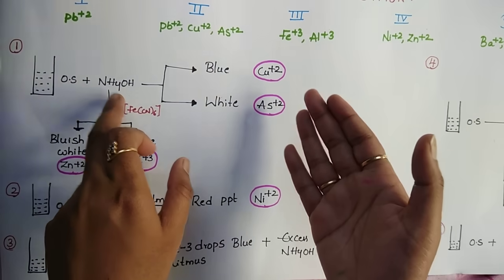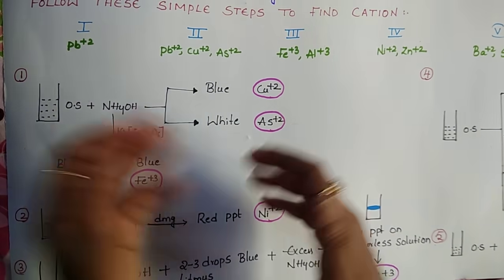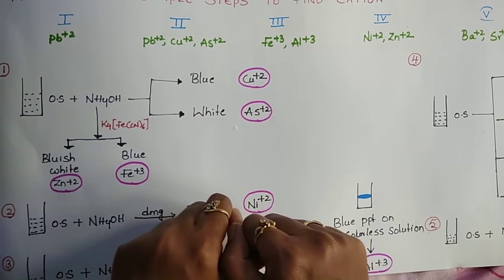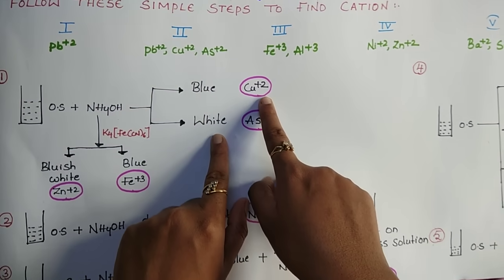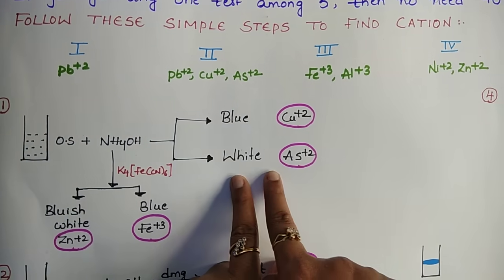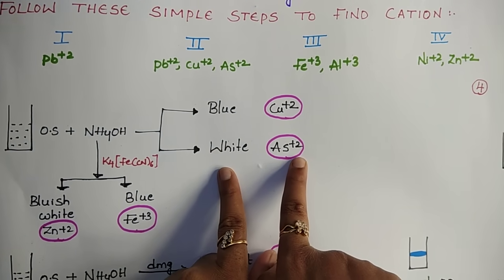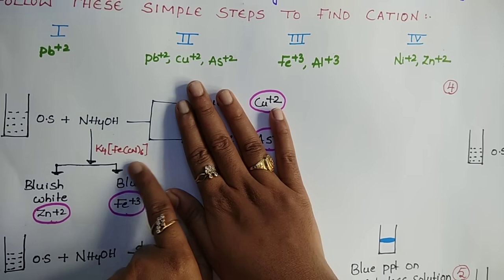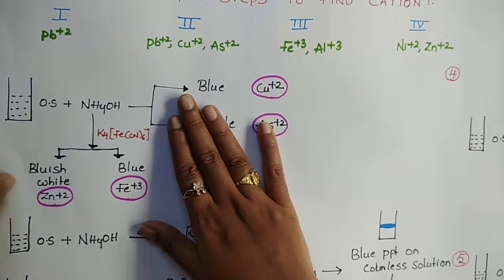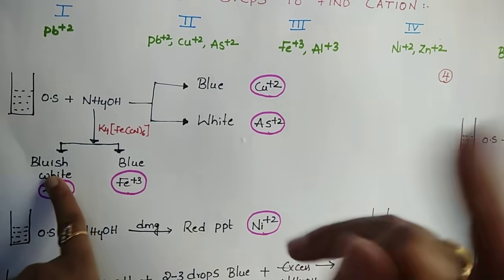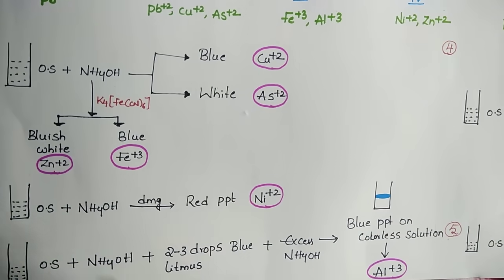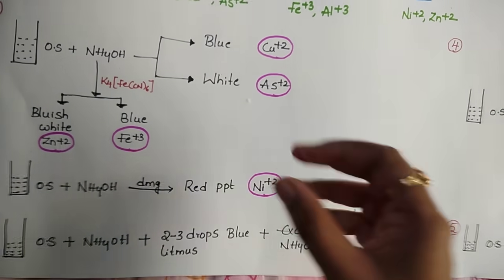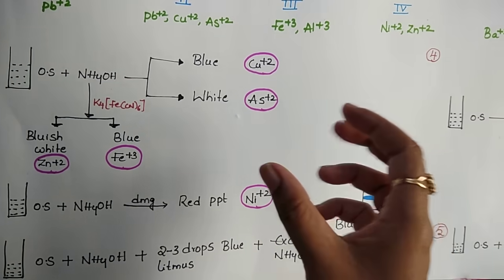Take your original solution and add ammonium hydroxide (NH₄OH) solution, available in your laboratory. You may observe two things: if blue color forms, it indicates Cu²⁺ cation is present; if white precipitate forms, it indicates As²⁺ (or Al³⁺ group) cation is present. If there is no color change after adding NH₄OH, add K₄[Fe(CN)₆] — potassium ferrocyanide — to the same test tube. You may observe bluish-white color indicating Zn²⁺, or blue color indicating Fe³⁺.